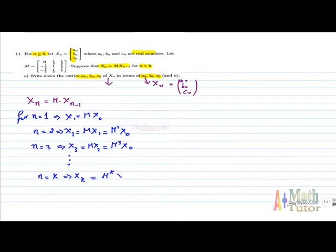H to the power k times x_0, and for k equals n, it means x_n equals H to the power n times x_0. So this is a recursive relation between the nth term of x and its initial term x_0, instead of having it between the nth term and its previous term.